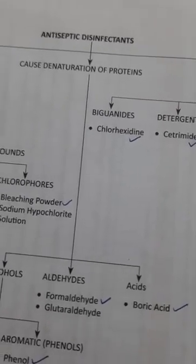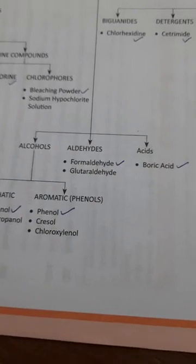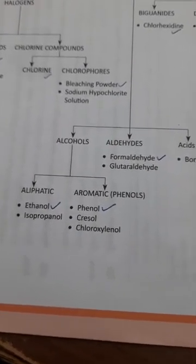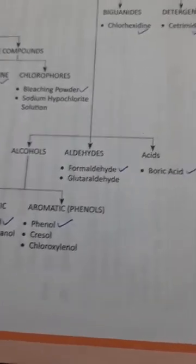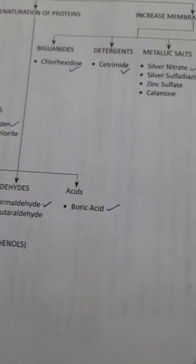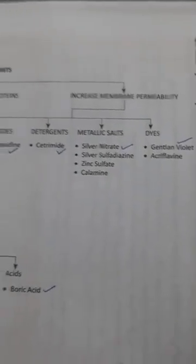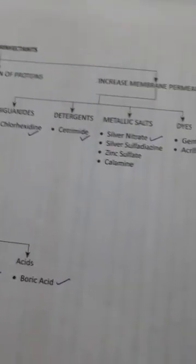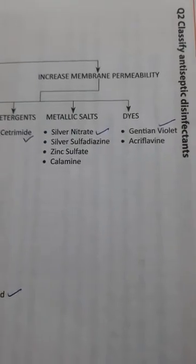Another category is antiseptic disinfectants which cause denaturation of proteins. These include alcohols, aldehydes, and acids. Alcohols include aliphatic and aromatic alcohols — ethanol and phenol respectively. Aldehyde includes formaldehyde, and the acid included is boric acid.